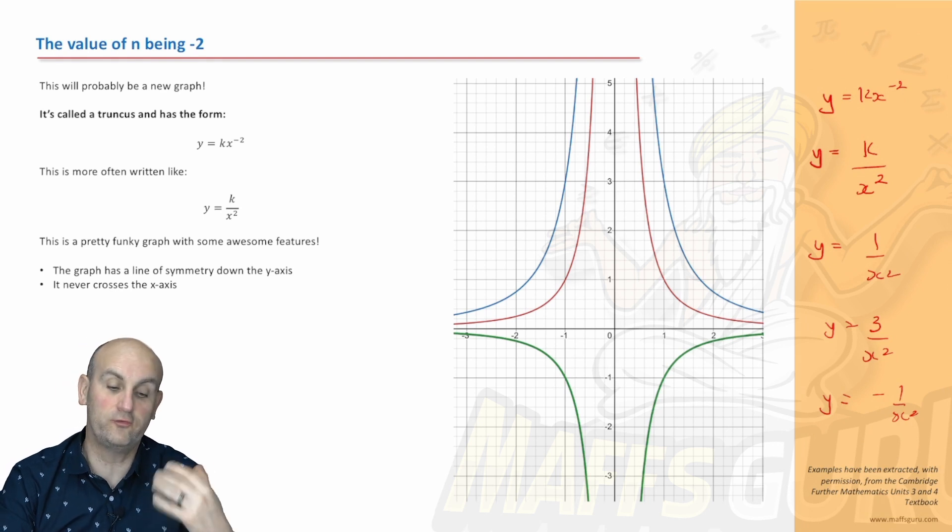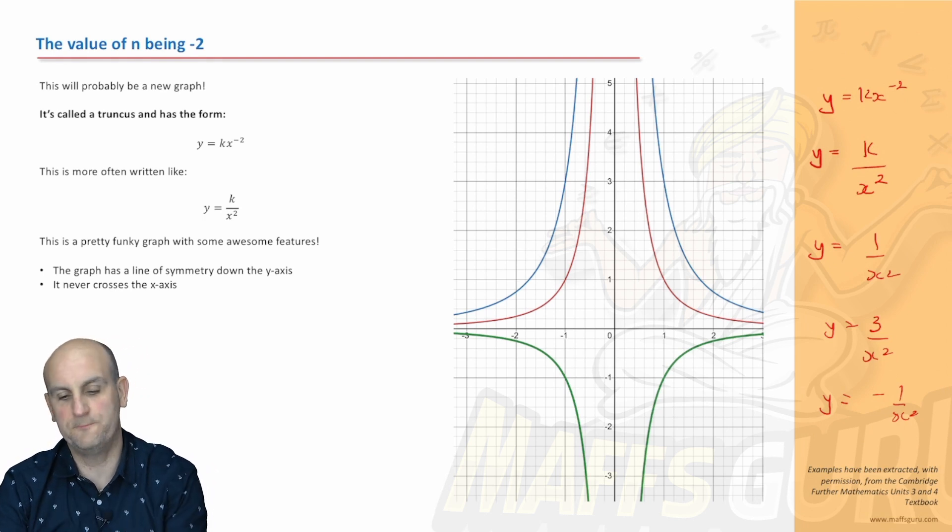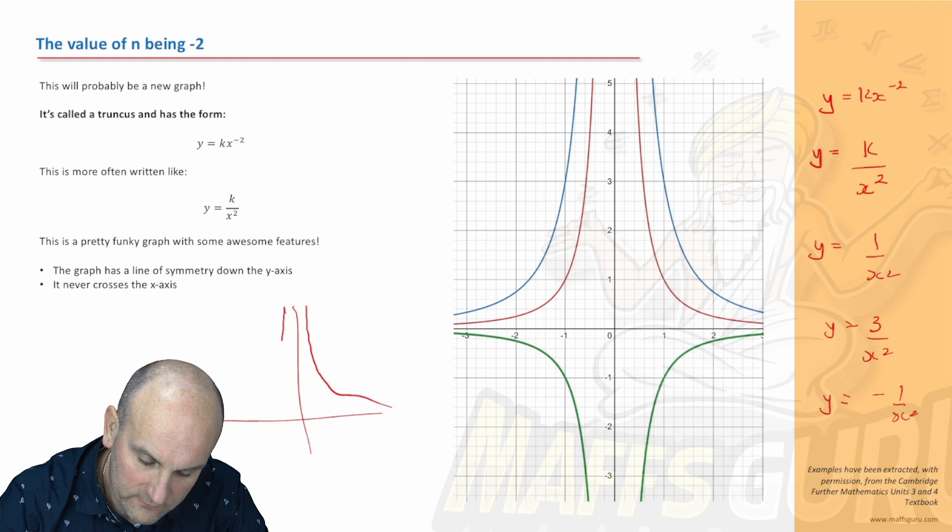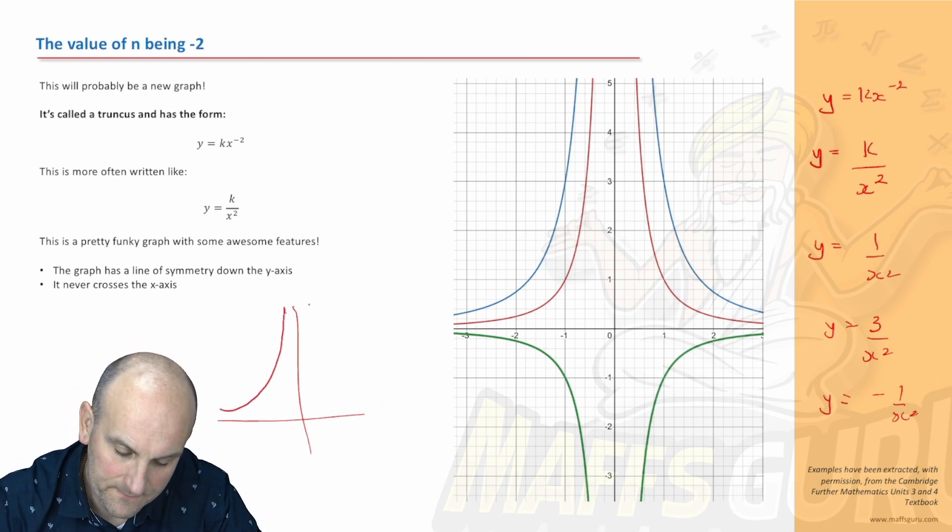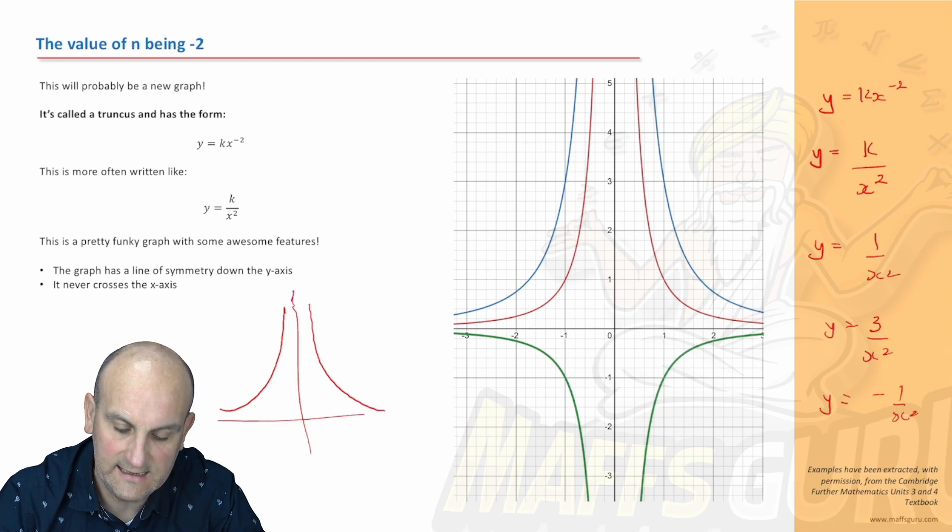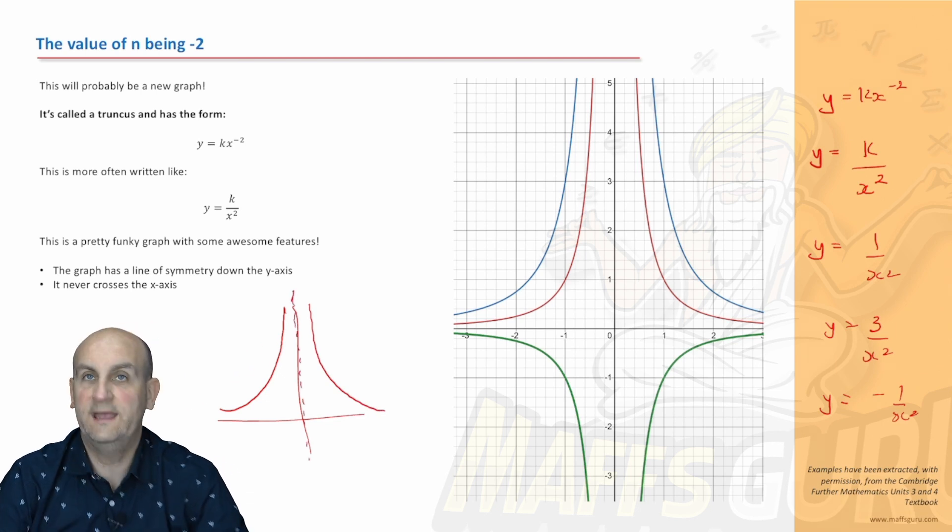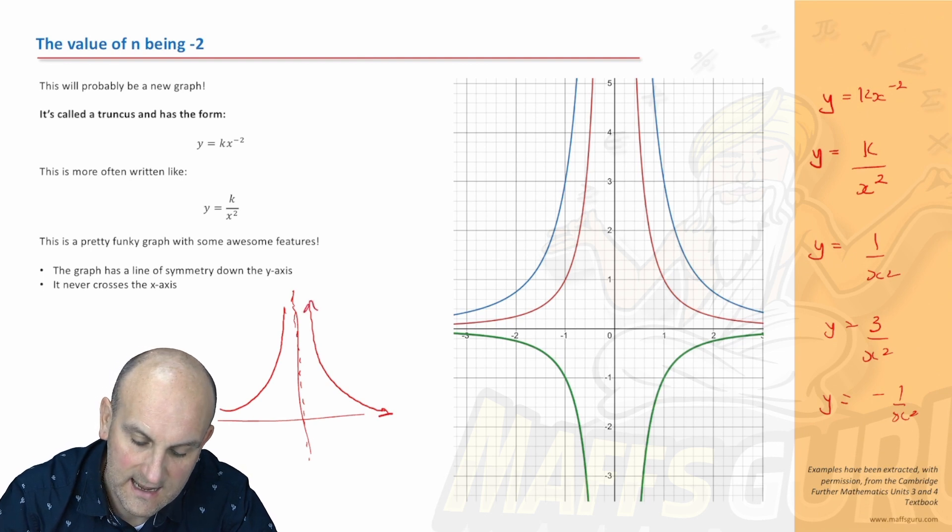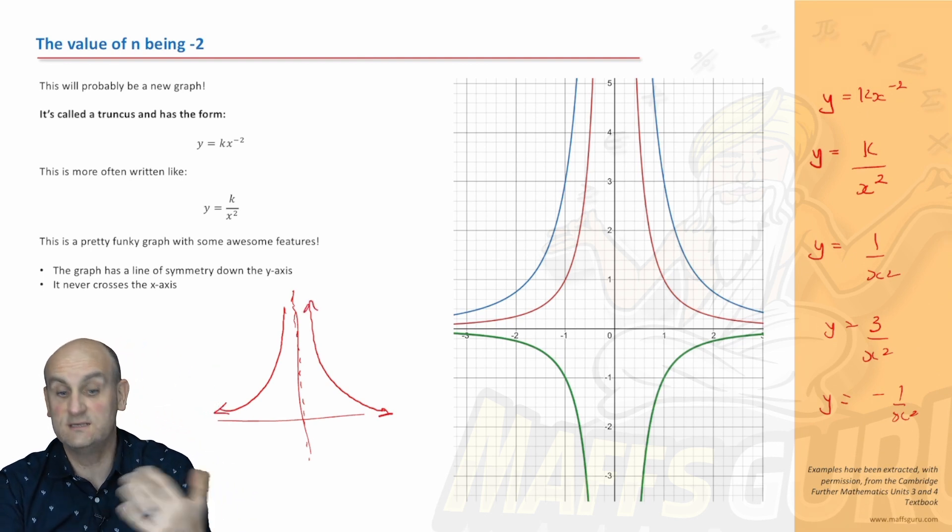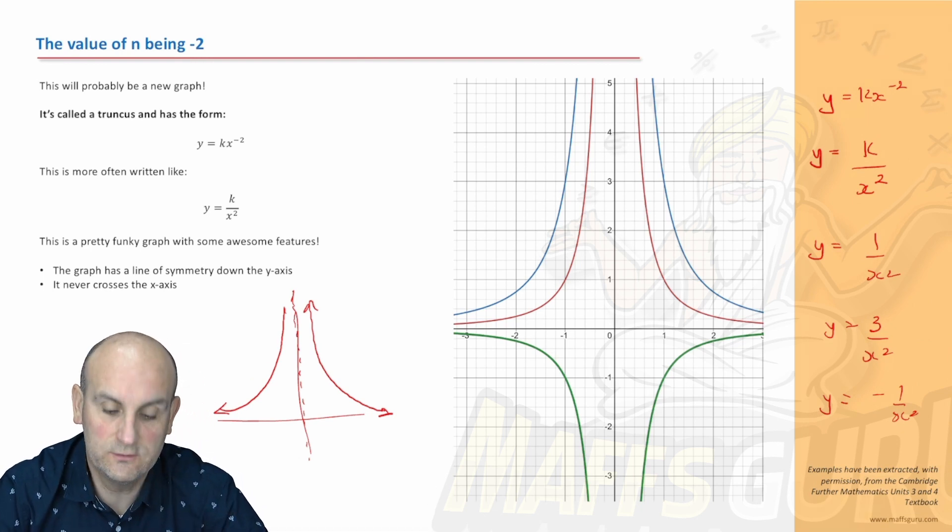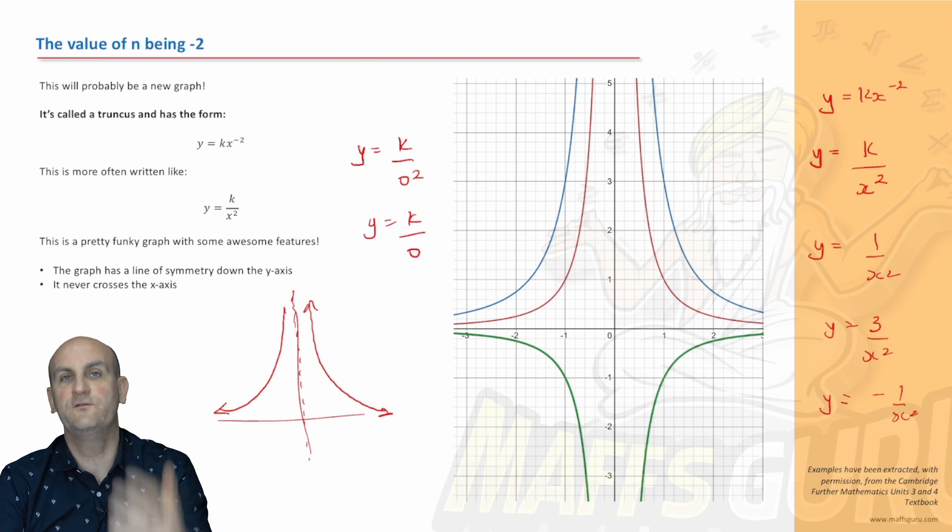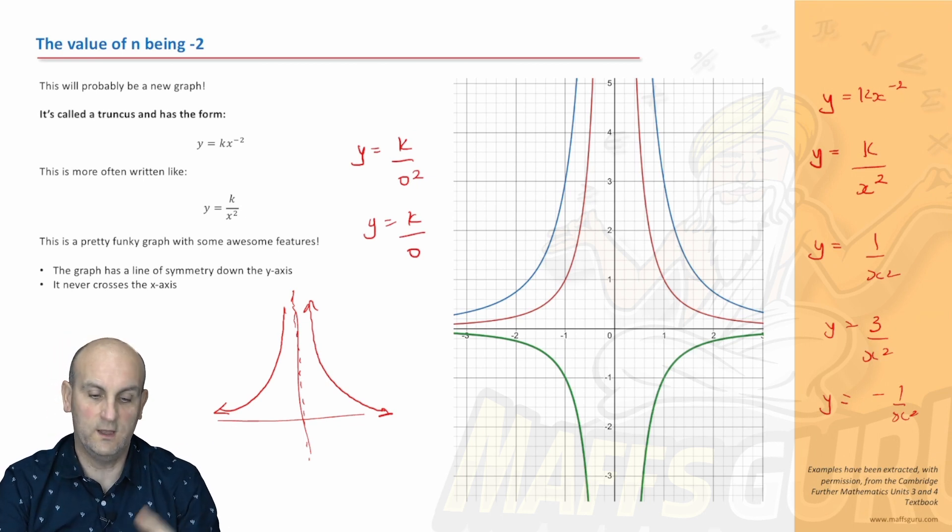These graphs are special because they're called truncus or truncai for more than one. A truncus basically has a form like this: it does that, and then it does that. It is symmetrical around the y-axis. It goes that way and that way. Again, it never touches the x-axis, it never touches the y-axis for very much the same reasons as I gave earlier. We can't have x equals 0 because what we would have there is y equals k on 0 squared. Well, 0 squared is 0 and we don't like dividing by 0 because it's undefined or infinite.